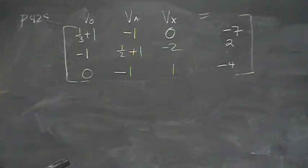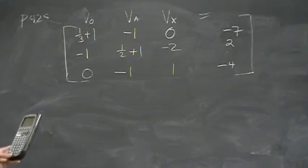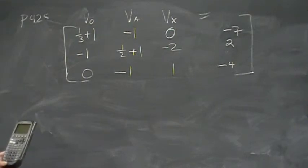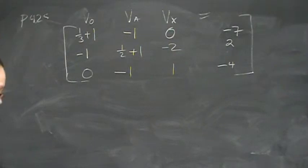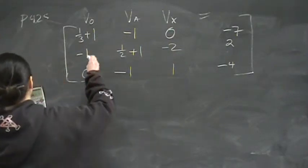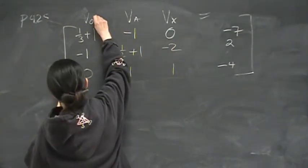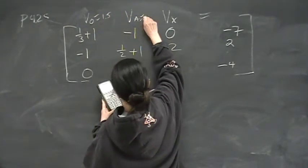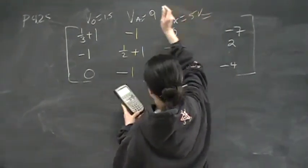And it tells me that Vout is 1.5 volts, which is what I had before on paper, and Va is 9 volts, which is what I had here, and Vx is 5 volts, and that's it. So Vout is 1.5 volts, this is 9 volts, and this is 5 volts, and that's the answer to that problem.